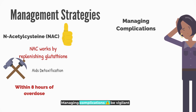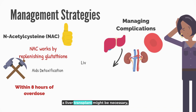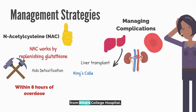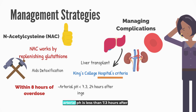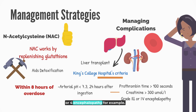Managing complications: be vigilant for signs of acute liver failure, renal failure, and coagulopathy. In severe cases, a liver transplant might be necessary, guided by specific criteria such as those from King's College Hospital. King's College Hospital criteria are met when arterial pH is less than 7.3 at 24 hours after ingestion, or all of the following: prothrombin time greater than 100 seconds, creatinine more than 300, and grade 3 or 4 encephalopathy.